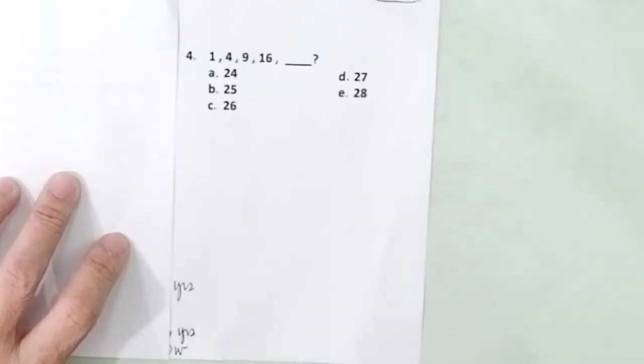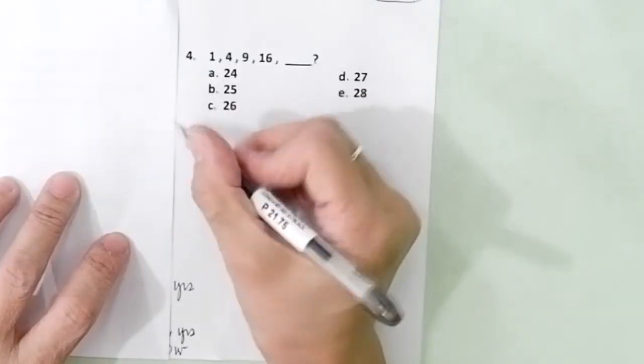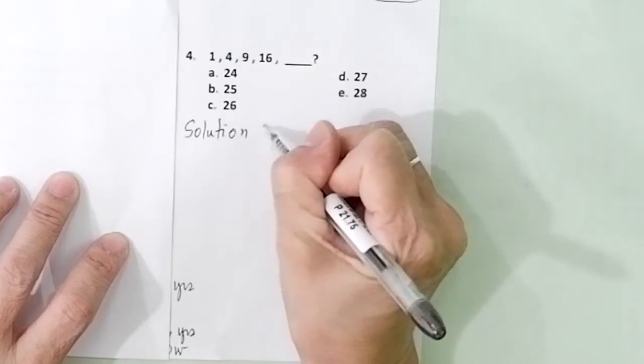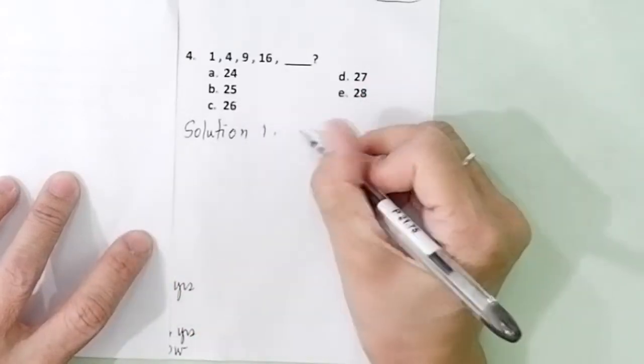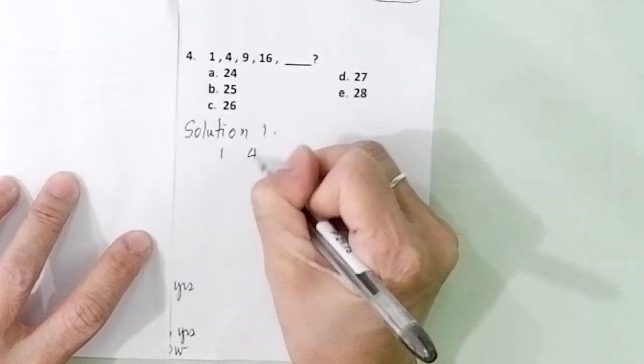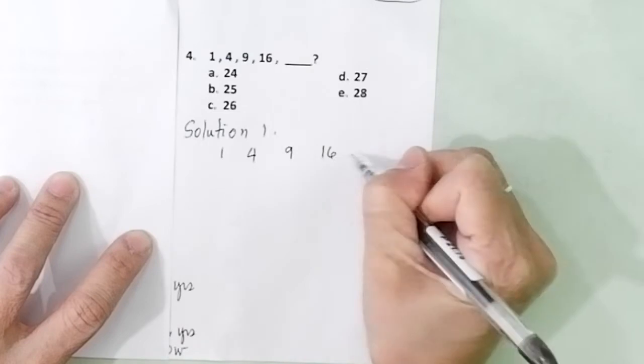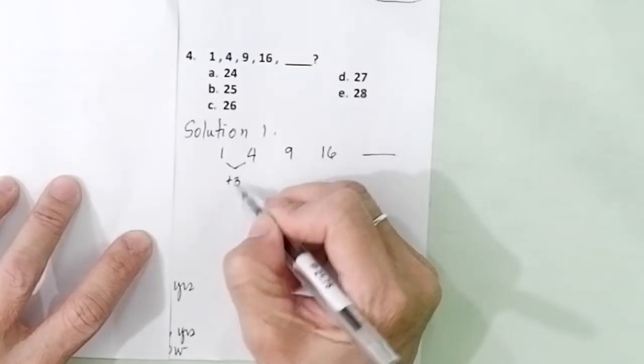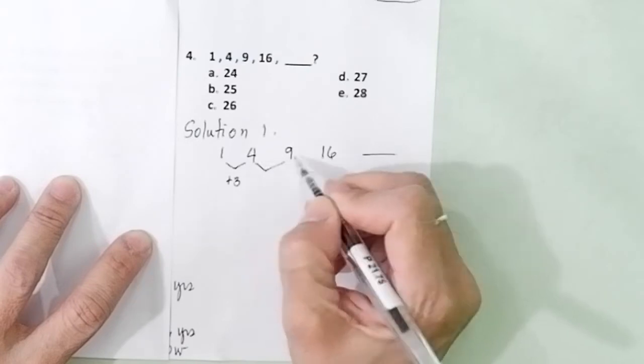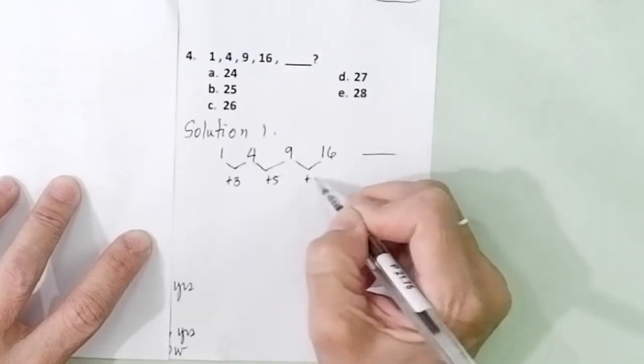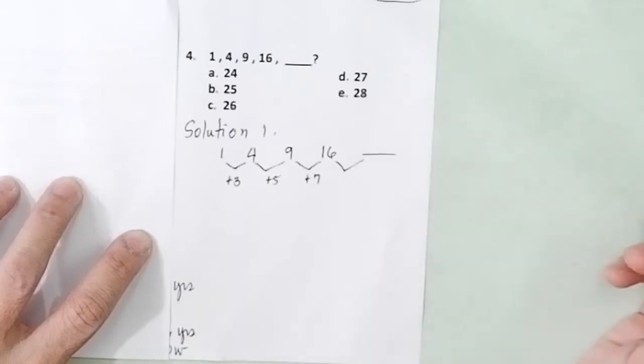There are two ways to approach the problem. Solution one is this. In solution one, you can get the differences. Like, this is 1, 4, 9, 16, blank. Get the difference here? This is plus 3. What do you add to get 9? You get plus 5. What do you add to get 16? You get plus 7. What do you think is the next one?